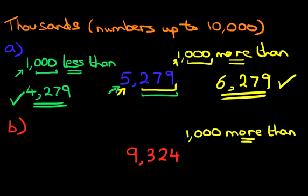Which digit changes? In this number, which digit is going to change? Well, it's a 9, isn't it? It's going to go forward by 1. The answer becomes 10,324.